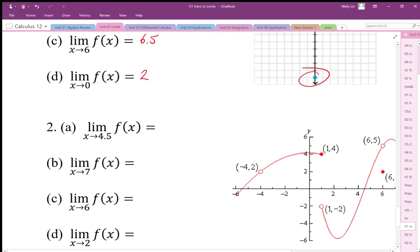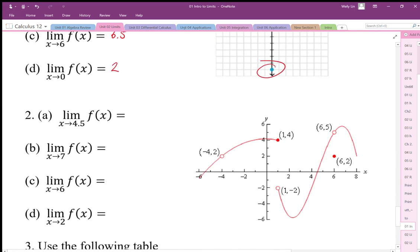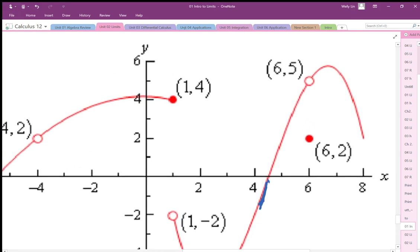So looking at this next graph, what's happening for these limits? As x approaches 4.5, so 4.5 is right about there. I'm just going to zoom in. It's approaching 4.5 from here and approaching 4.5 this way. And it looks like it's headed towards 0.